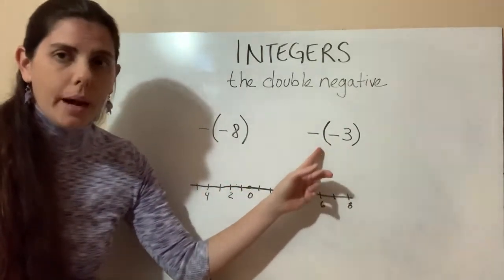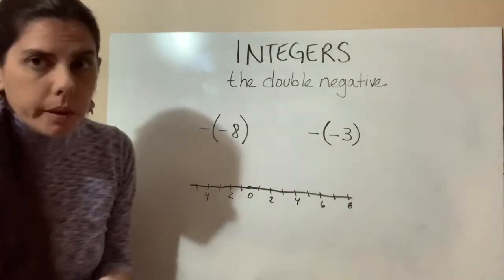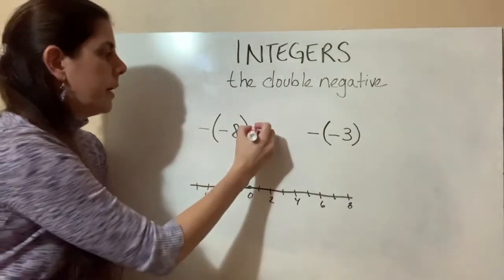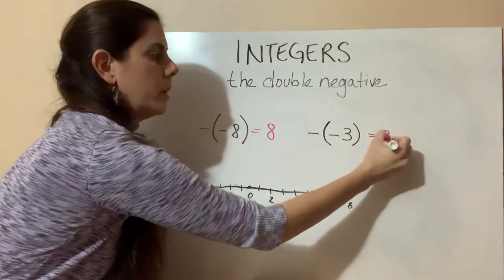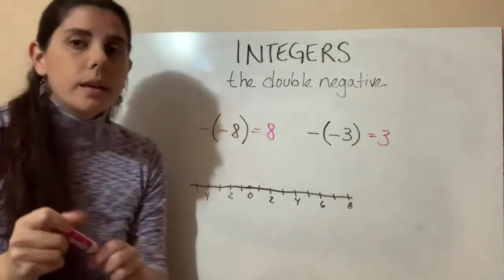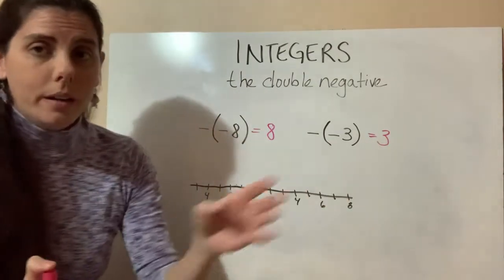What happens when you have a minus a negative? Well, that double negative is going to end up very simply being a positive. So double negative, that's just going to equal a positive eight, and this will be a positive three. So why is that? I'd like to just take a minute to explain the concept behind this.